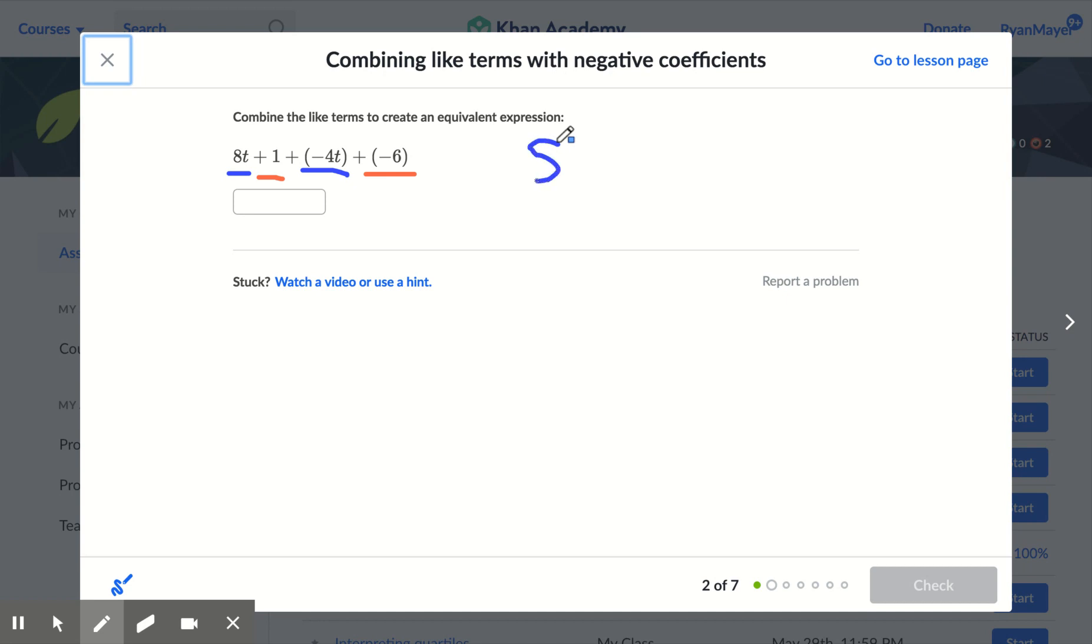I'll do my coefficients first. That means the numbers with the variable. So 8t. This is a negative 4t. I know there's a plus sign here with the negative 4t. But plus a negative is the same thing as just saying a negative 4t or minus 4t. Then I have plus one. So we'll go ahead and do that. Plus one. And a negative 6. Plus a negative 6. Or just minus 6. So what I would do first is I would first look at the 8t minus 4t. 8 minus 4. That's 4t.